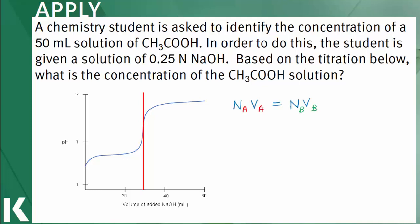Using the same equation from earlier, and rearranged to solve for the normality of acid, the normality of base is 0.25 normal, the volume of base added is 30 mL, and the volume of acetic acid from the question stem is 50 mL. The calculated normality of acetic acid is 0.15 normal.